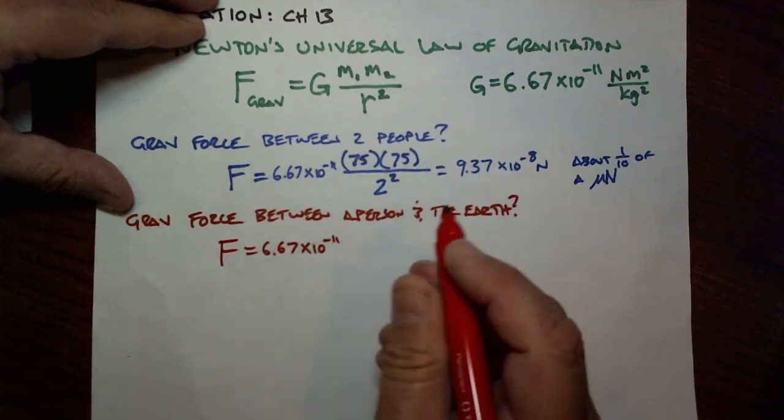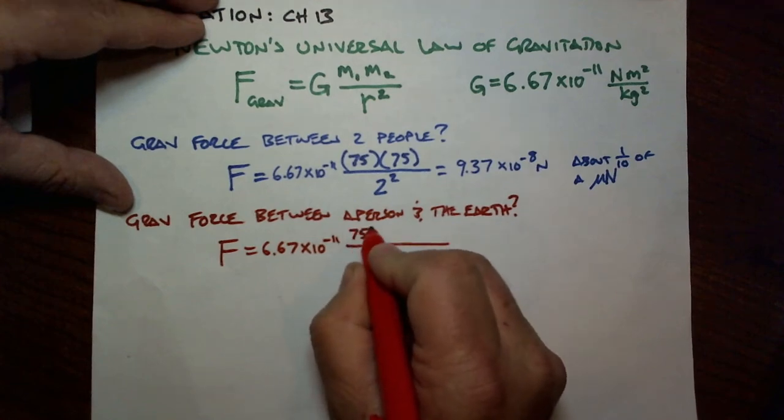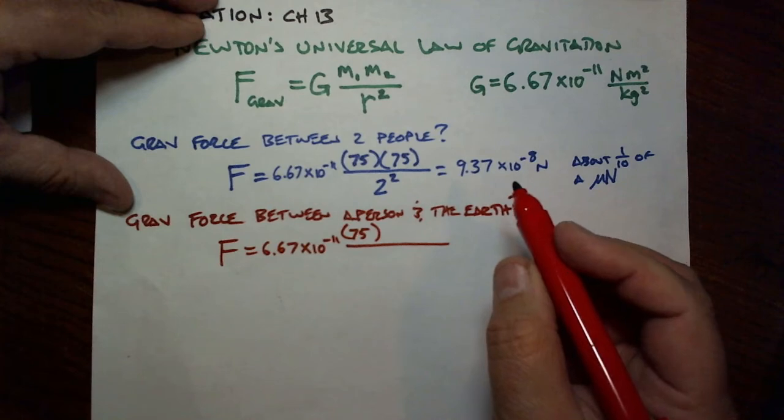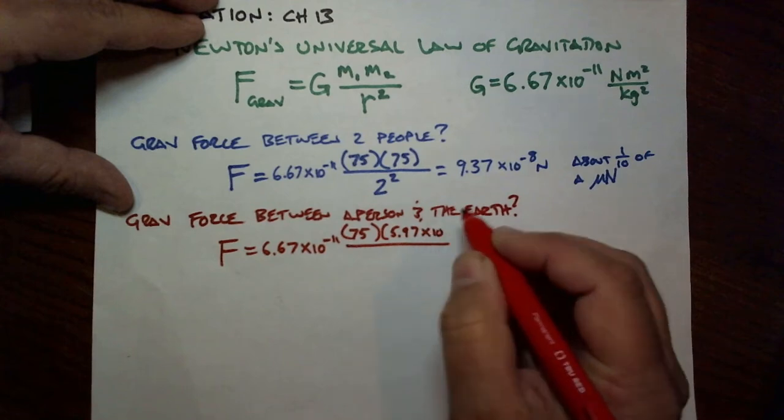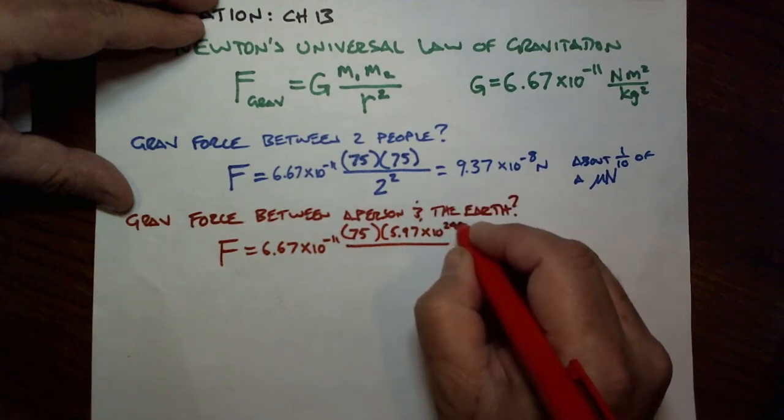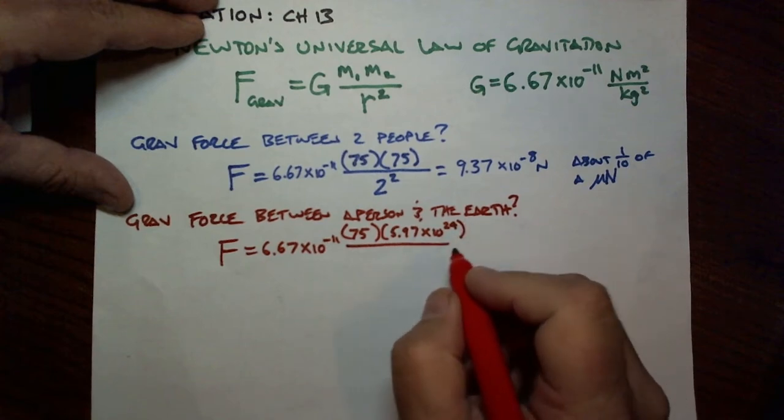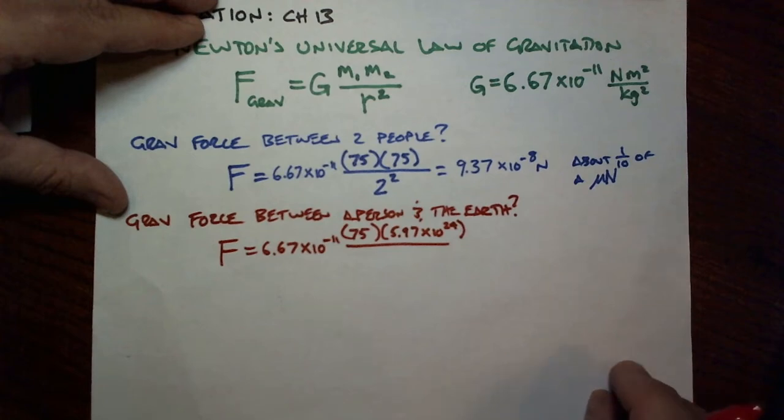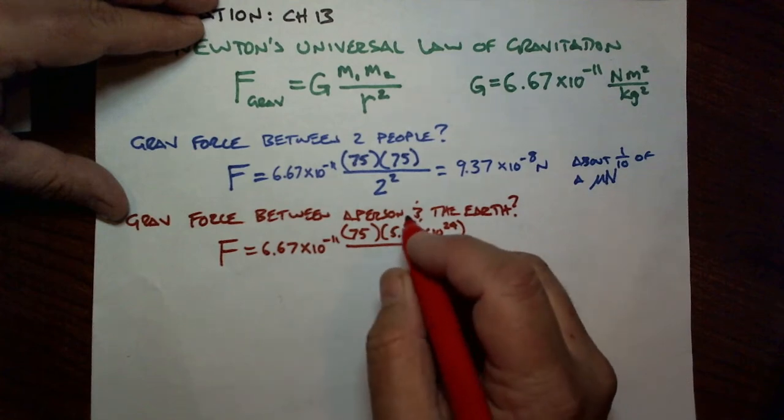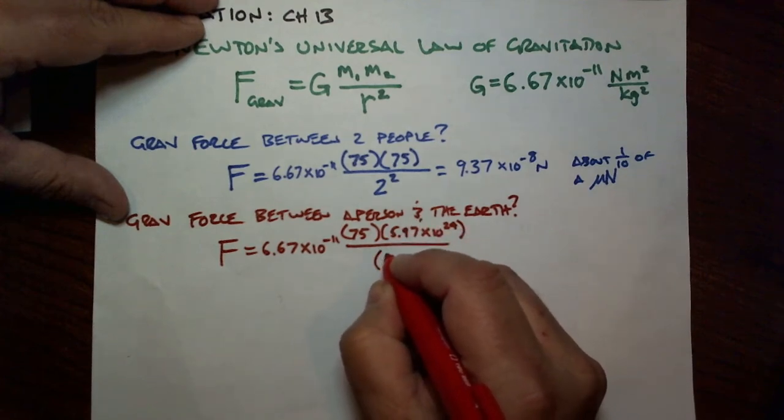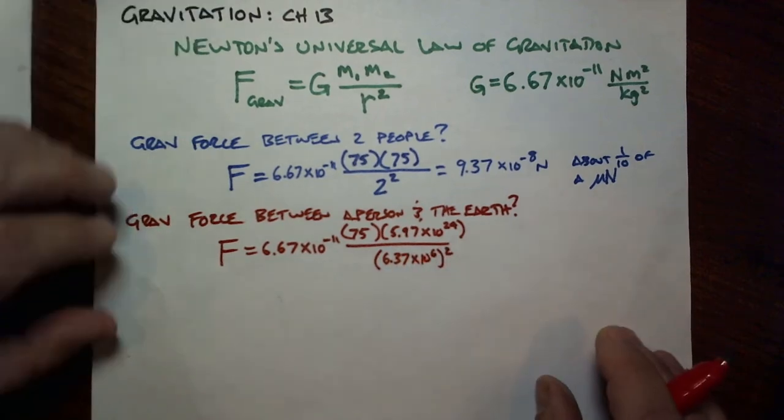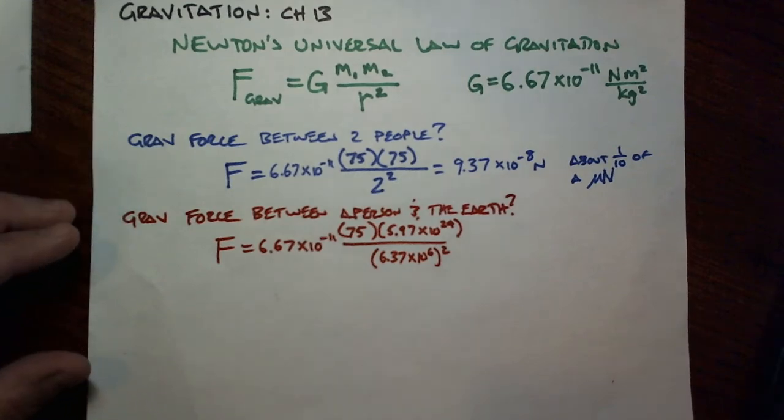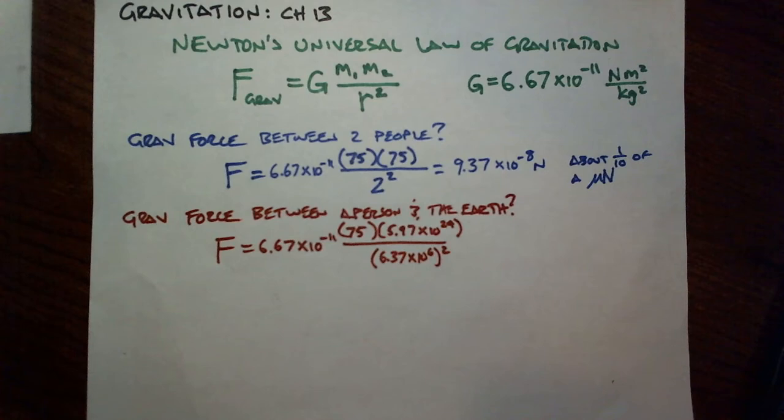The force of gravity between a person and the Earth is the constant, 6.67 times 10 to the minus 11. On the top of the fraction, we're going to have 75 for the mass of the person, but the mass of the Earth is 5.97 times 10 to the 24. Yeah, that's where things get a little weird. On the other hand, how far are you from the Earth? It turns out that the distance that's important is from your center of mass to the center of mass of the Earth. So that would be the radius of the Earth squared, and the radius of the Earth happens to be 6.37 times 10 to the 6 meters, on average.